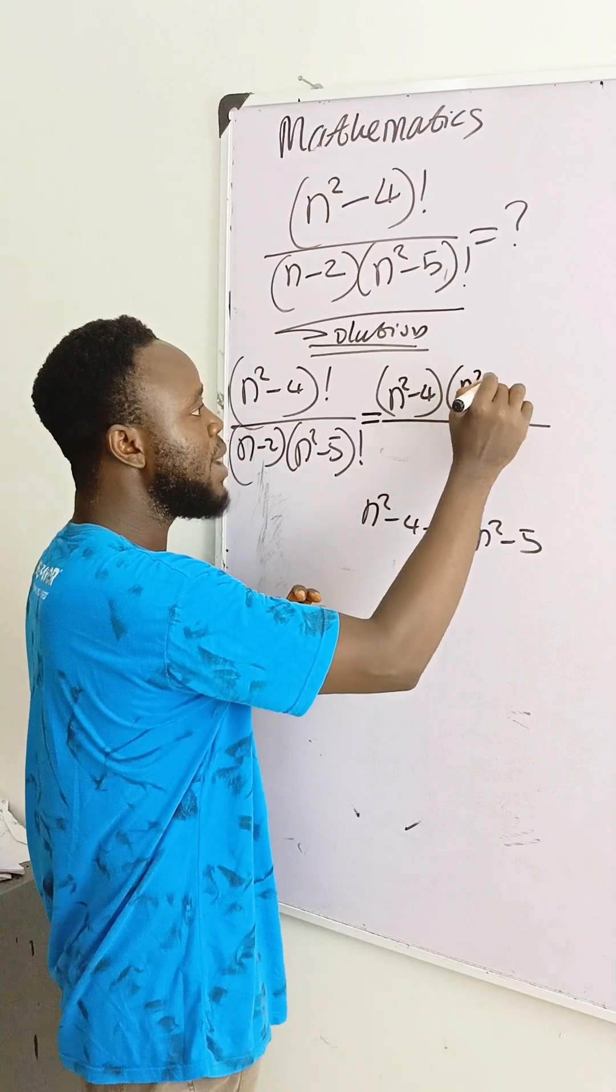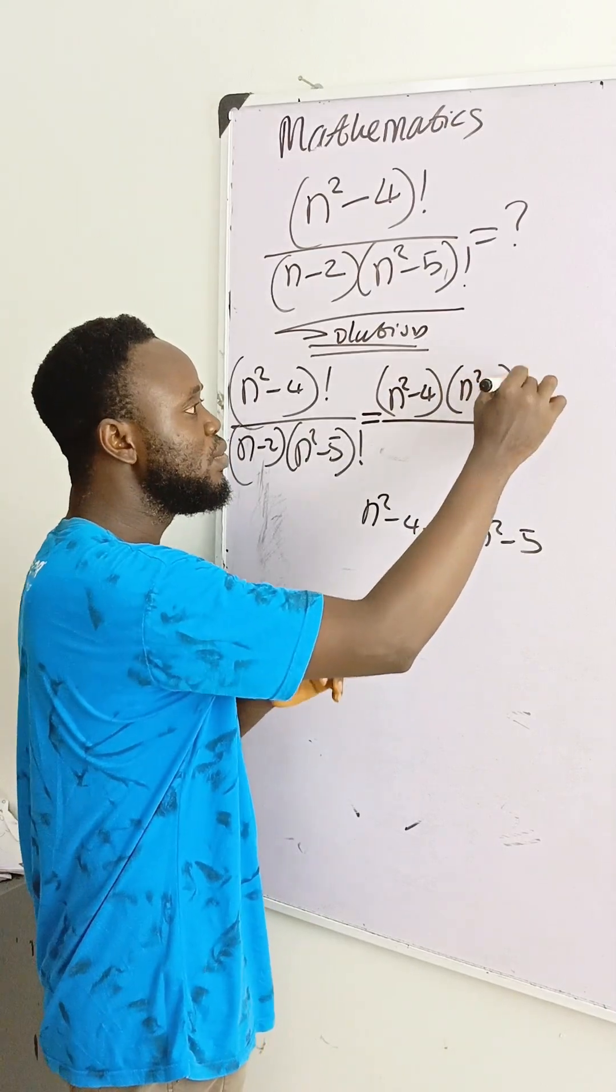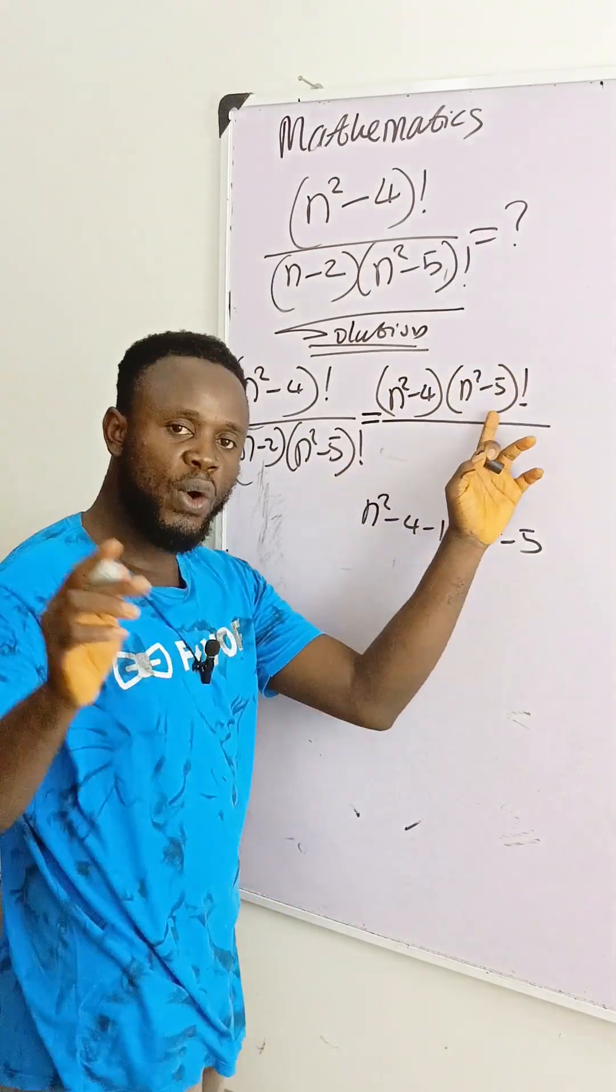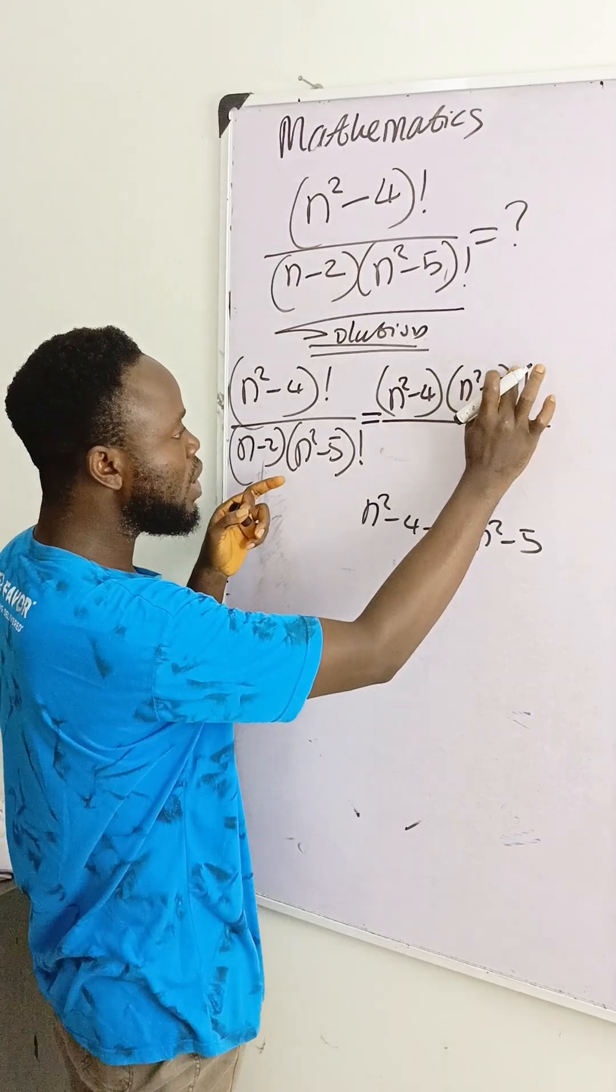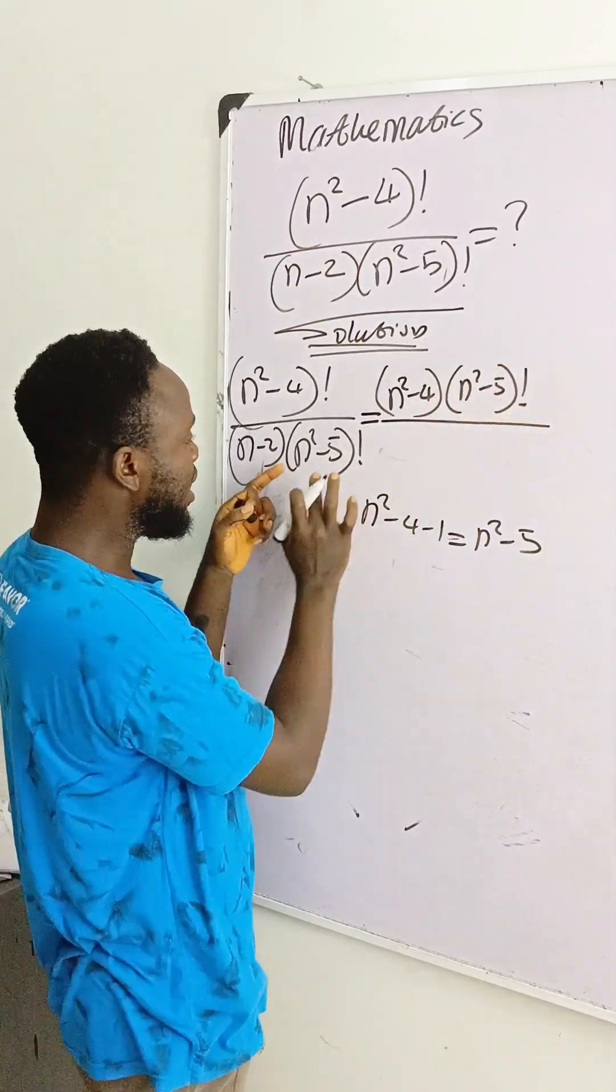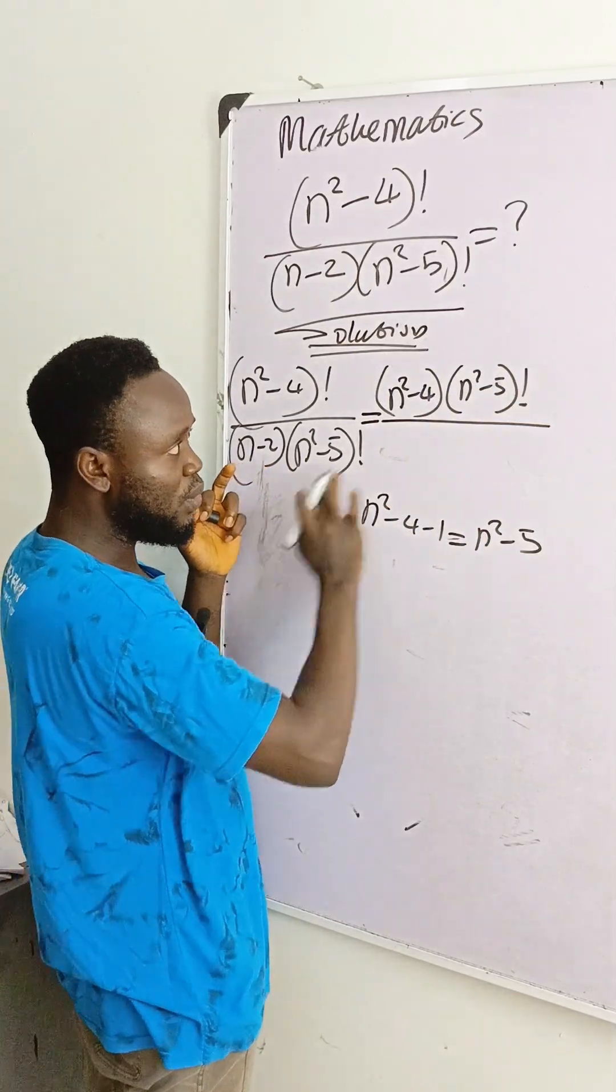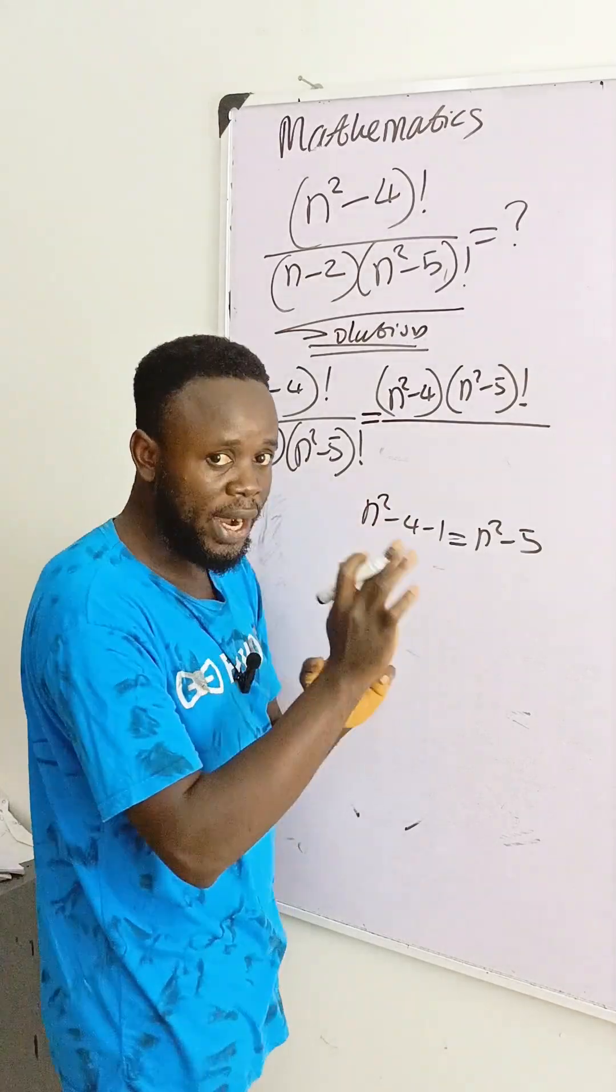So I will write n squared minus 5. I can continue the factorial, but I will not go ahead because I can see n squared minus 5 factorial here. I have seen it also at the denominator, so I will now be able to cancel. For that reason, I will not go ahead.